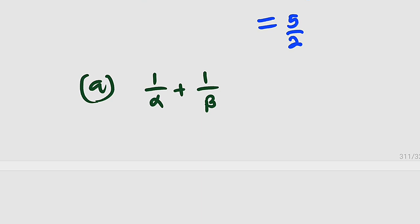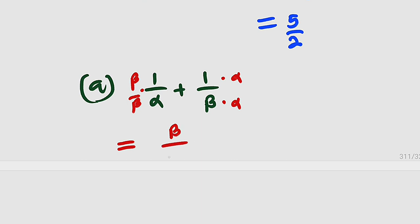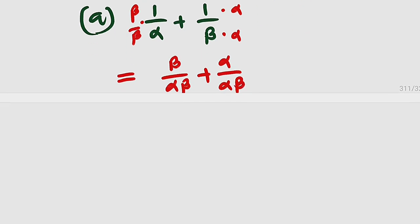To add these fractions, the denominators are not the same. So to make the denominators the same, we multiply the first fraction by beta over beta so that we have alpha beta on the bottom, and the second fraction by alpha over alpha. This gives us beta divided by alpha beta plus alpha divided by alpha beta. Since the denominators are the same, we can add the numerators, giving us beta plus alpha divided by alpha times beta, which is the same as alpha plus beta divided by alpha beta.